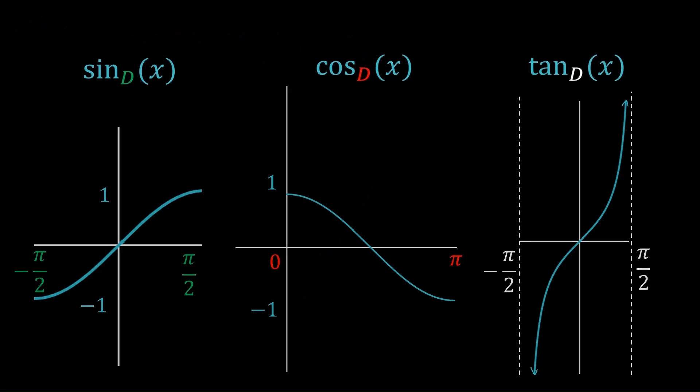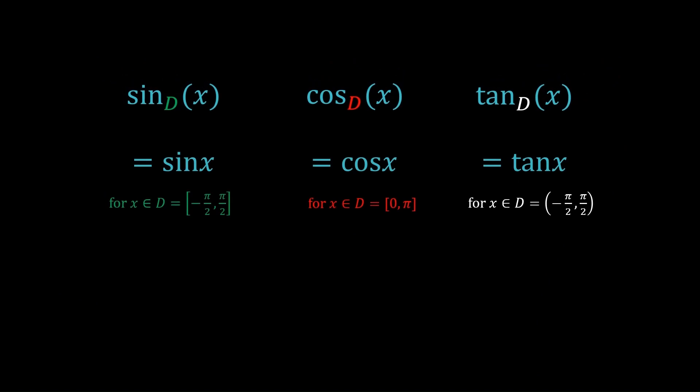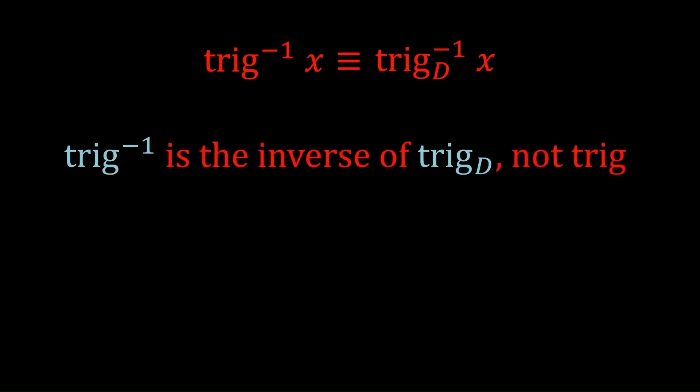And notice that for sine, the domain d is minus pi on 2 to pi on 2. For cos, the domain d is 0 to pi. And for tan, the domain d is minus pi on 2 to pi on 2, excluding the endpoints. Hopefully you understand now why we've defined trig d of x as equal to trig x for this domain d, which depends on the trig function, by the way. Now, these functions, trig d, are all invertible, so we can take the inverse. It turns out, the notation trig inverse is actually used to express trig d inverse. That is, trig inverse is the inverse of trig d, not trig. That notation might seem kind of weird, but that's just how it is. Basically, trig inverse is the inverse of the restricted trig function.